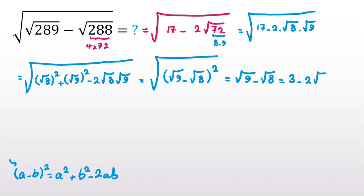Which is 3 minus 2√2. Now let me write some homework for you. The next one is: solve square root of square root of 625 plus square root of 624. Try to solve this as homework number 1.